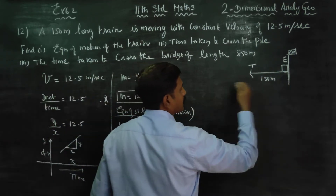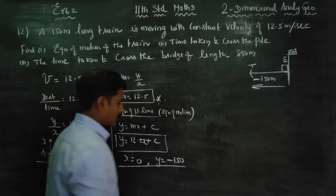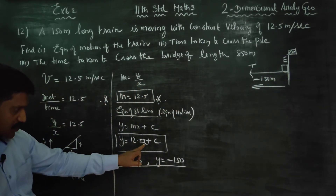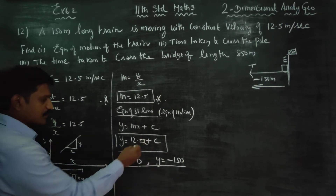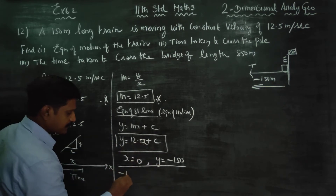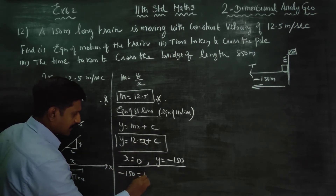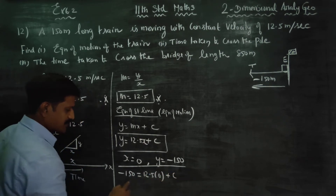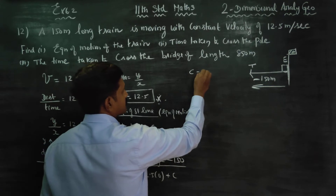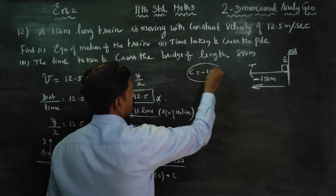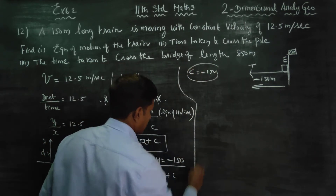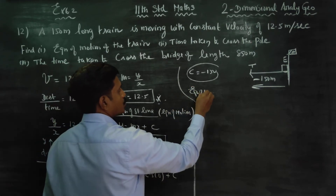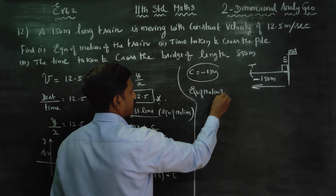If you cross this train station, you will find the negative symbol. Now, the train position: x is equal to 0, y is equal to minus 150. So minus 150 is equal to 12.5 into 0 plus c. Then c is equal to minus 150. This is the equation of motion of the train.